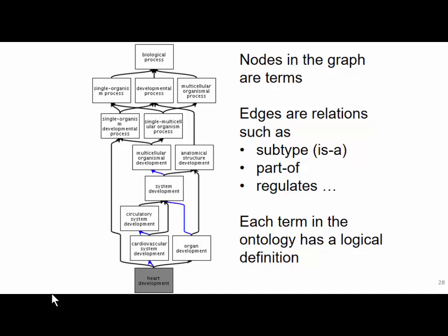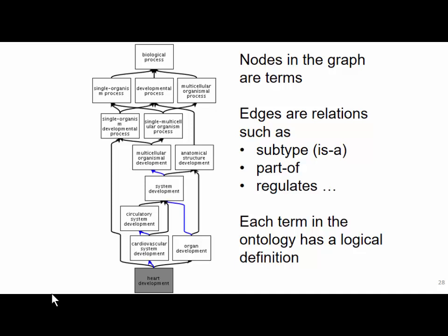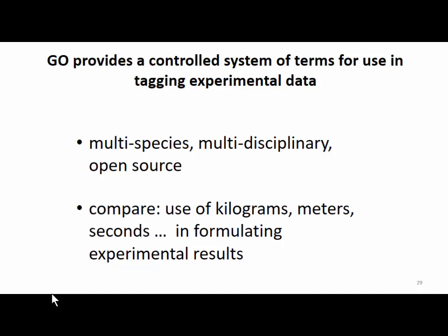The edges in the GO are relations such as subtype-of, part-of, regulates, and so on. All terms in the GO have a logical definition which the computer can reason with, in principle. The Gene Ontology is species-neutral, so it is used to tag gene sequence data not just for human beings but for mice, flies, yeast, and so forth. It is a kind of international standard for describing genomic and proteomic data across species, across disciplines, and across biological interests — aging, cell biology, and so forth. That is why it is so influential and so important.